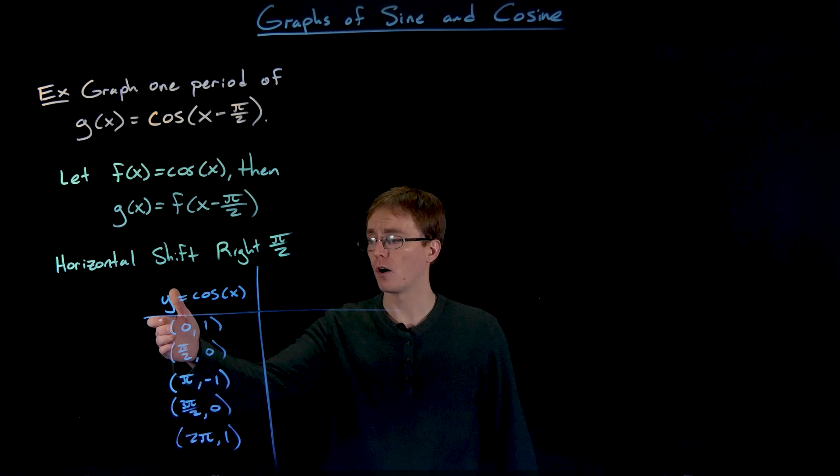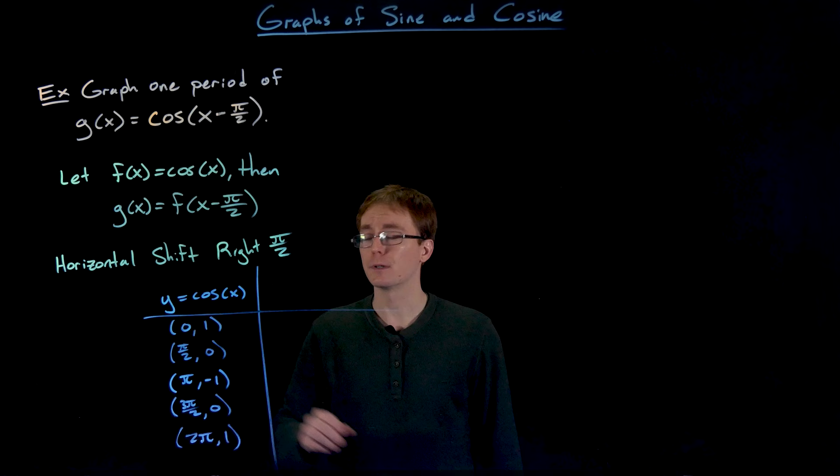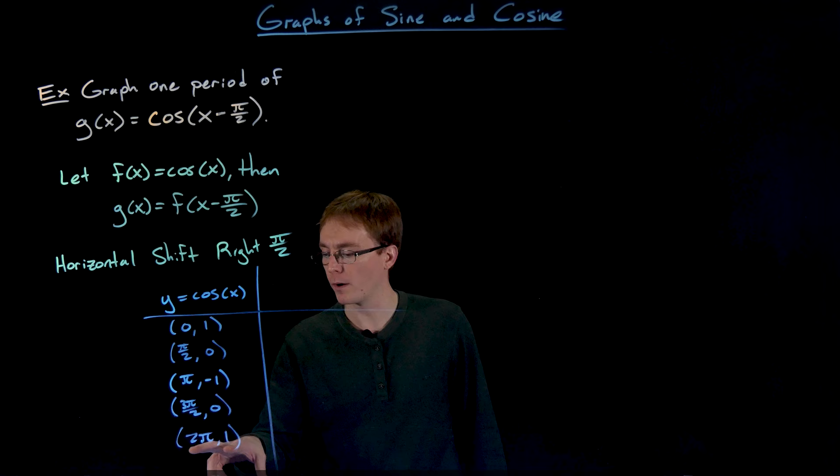(π, -1) is our minimum point, (3π/2, 0) is our second equilibrium or midline or average value point, and at (2π, 1) we're kind of back to where we started.